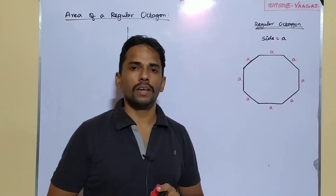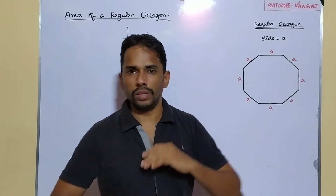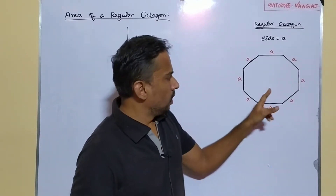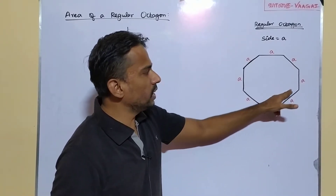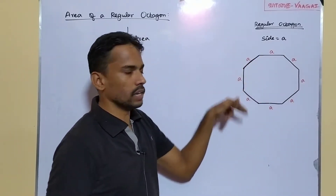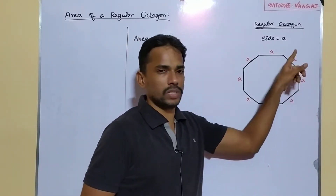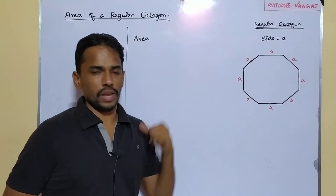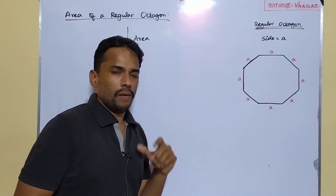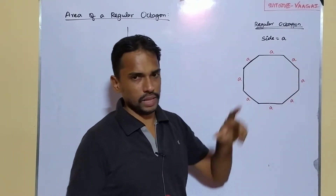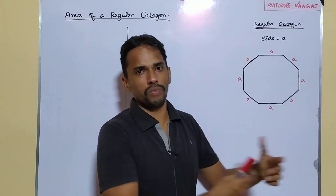We are going to take some approach to find the area. But before that, all of these interior angles are equal. Let's try to find these interior angles first, then we go find the area — because on the way to finding this area, we may have to use the angle properties.